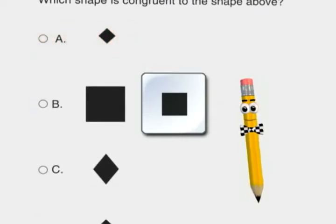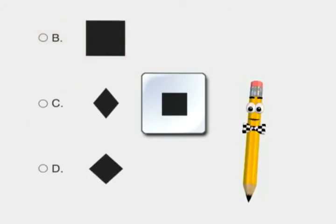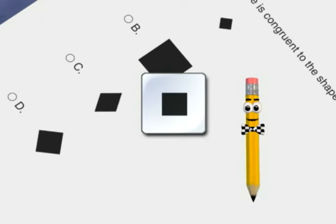Shape B is a square, but it is too large. Shape C is a diamond, no matter which way we turn the page.